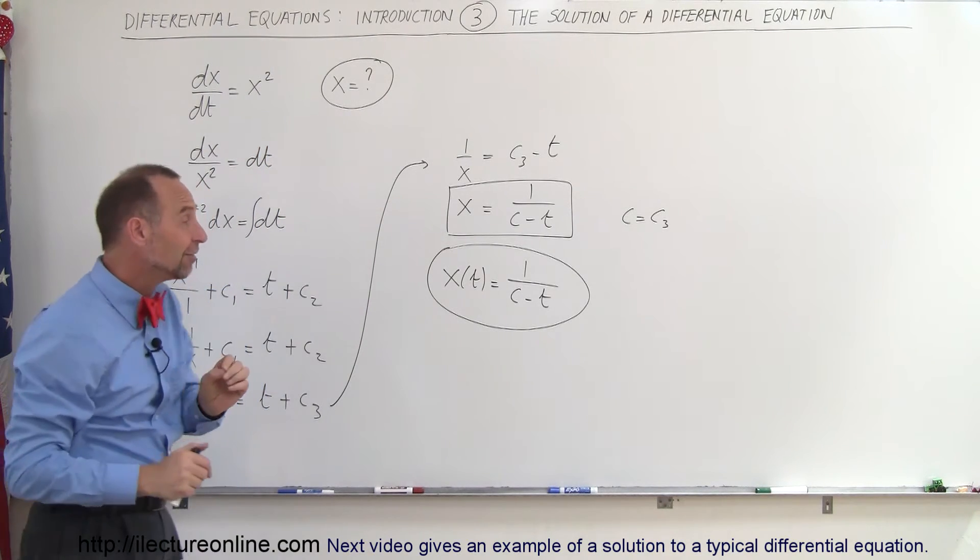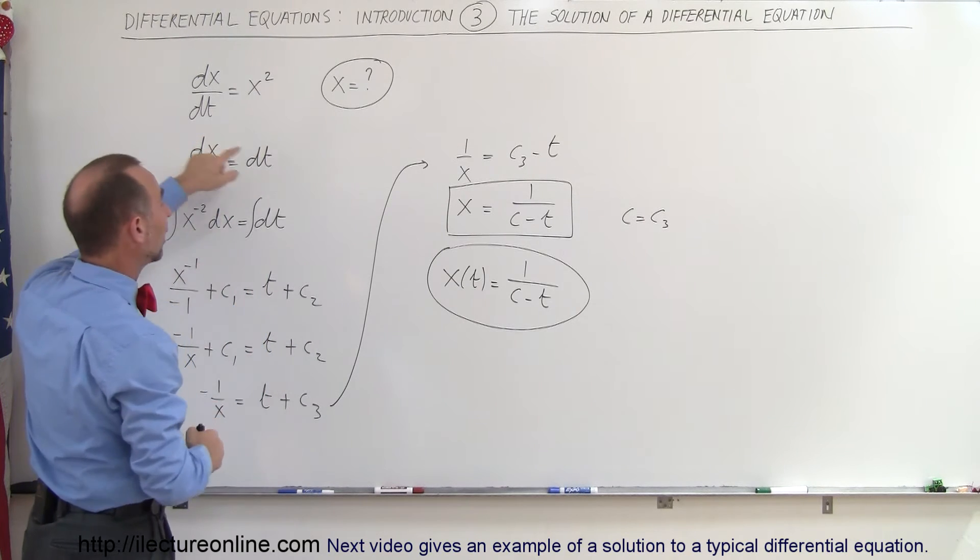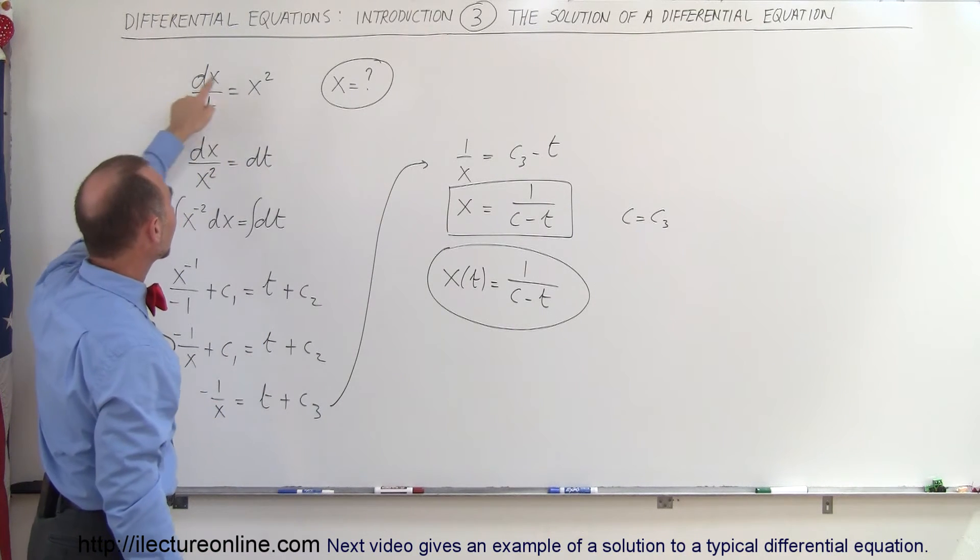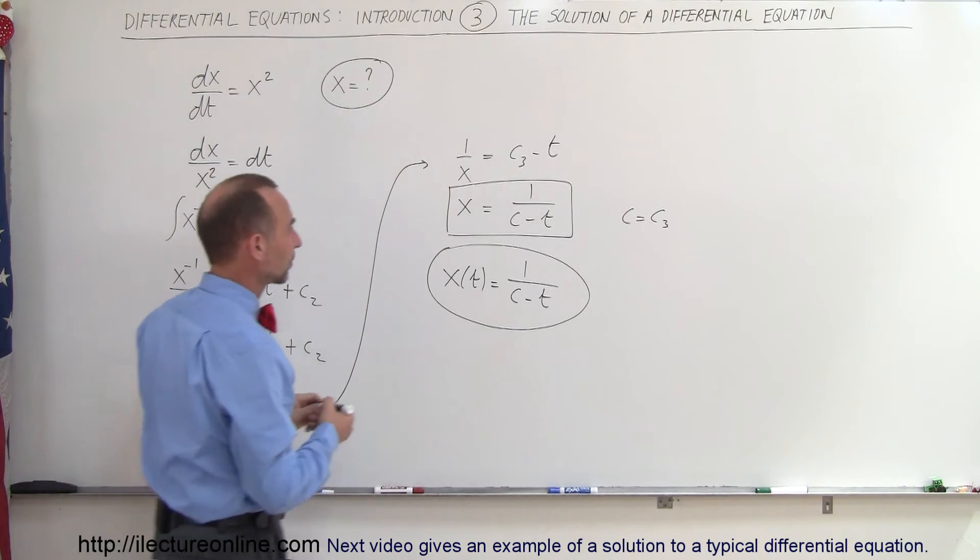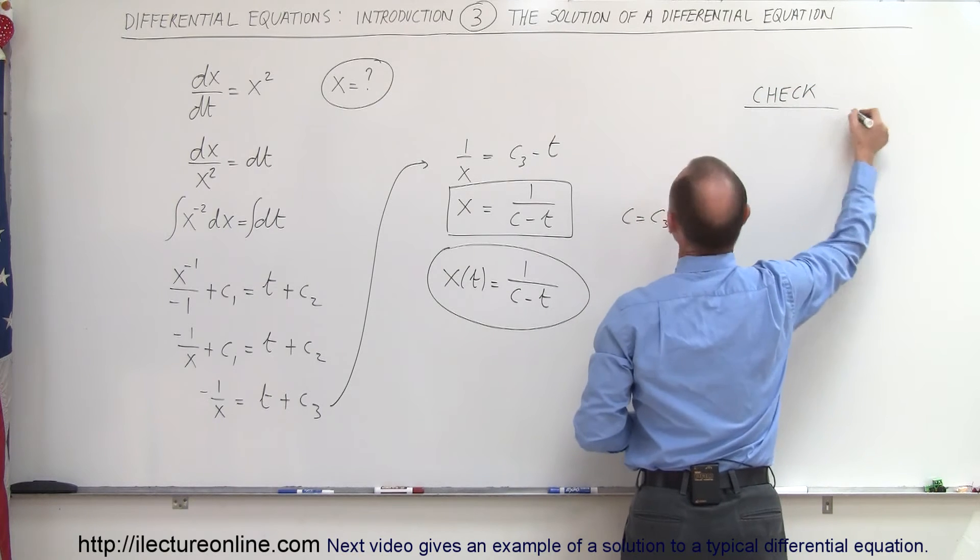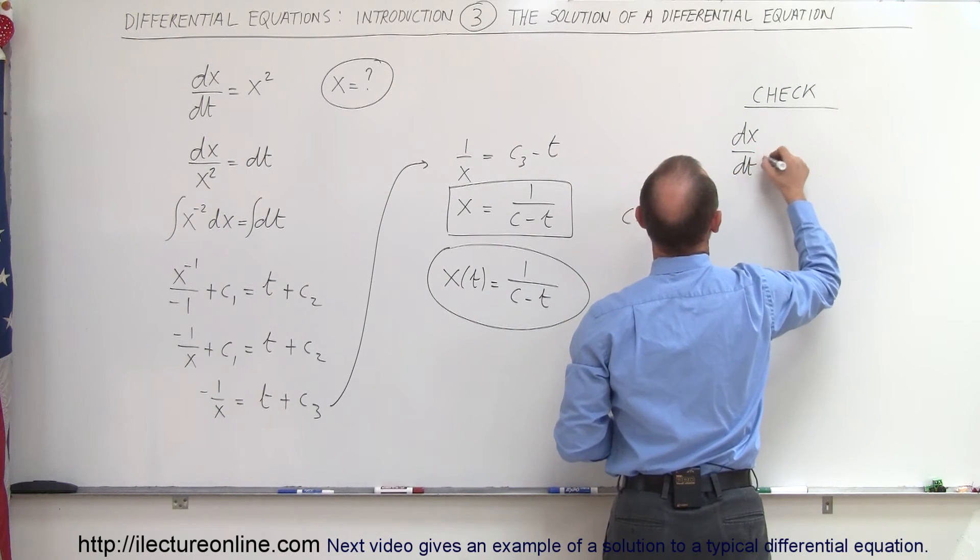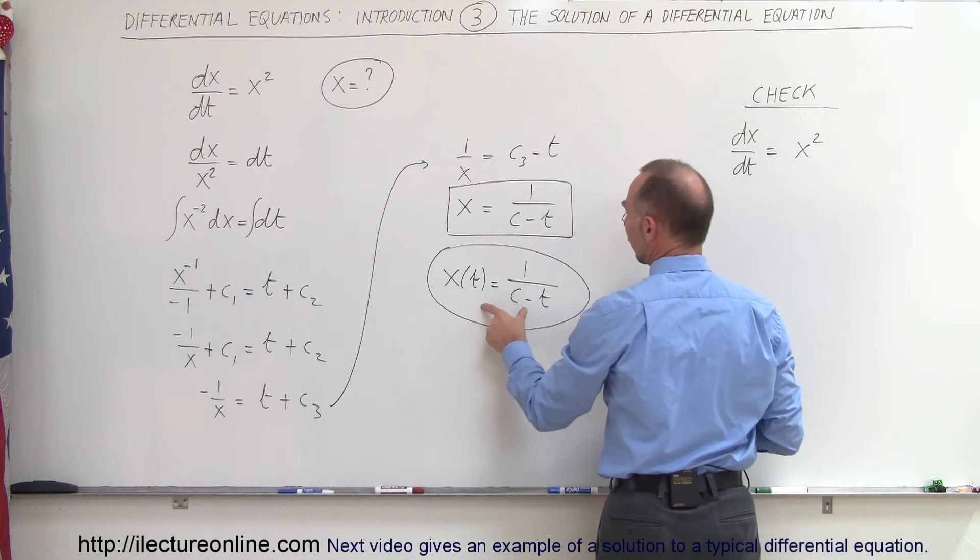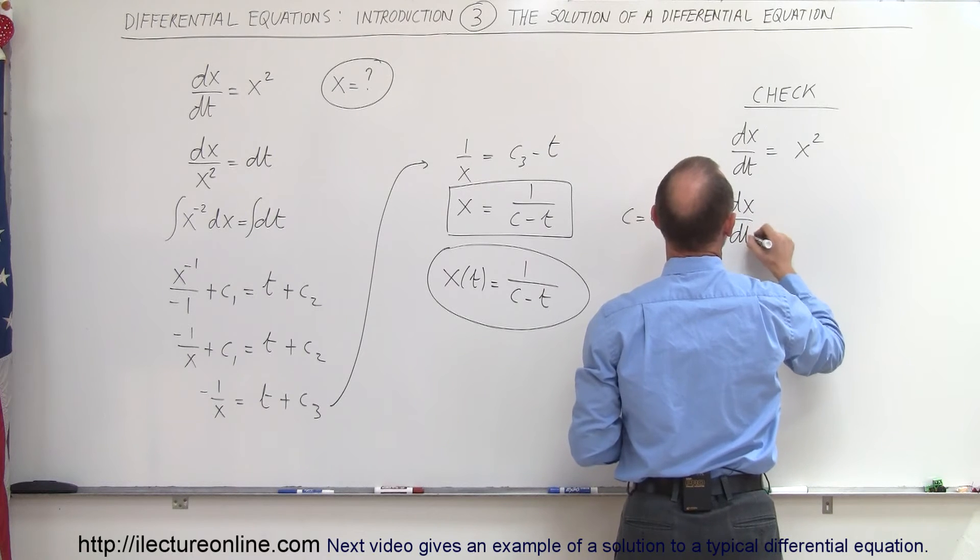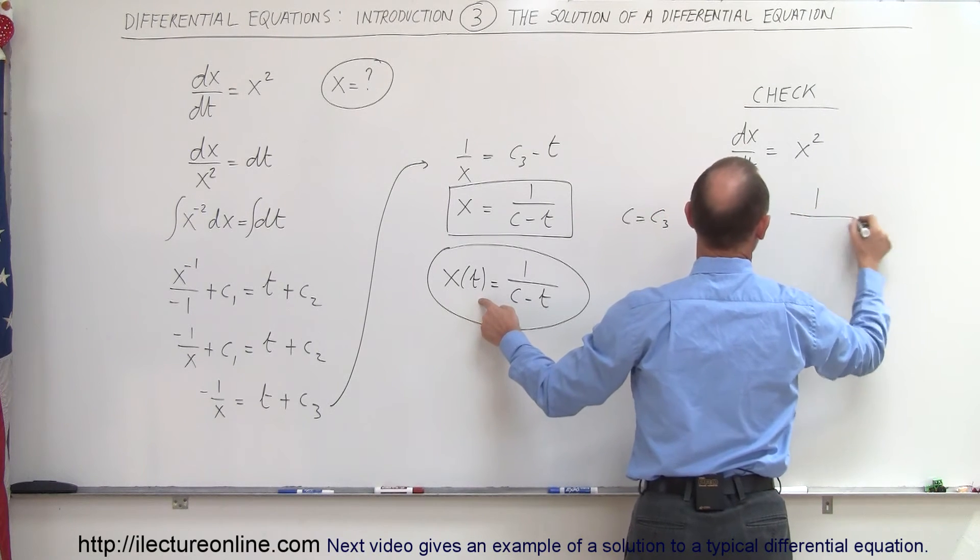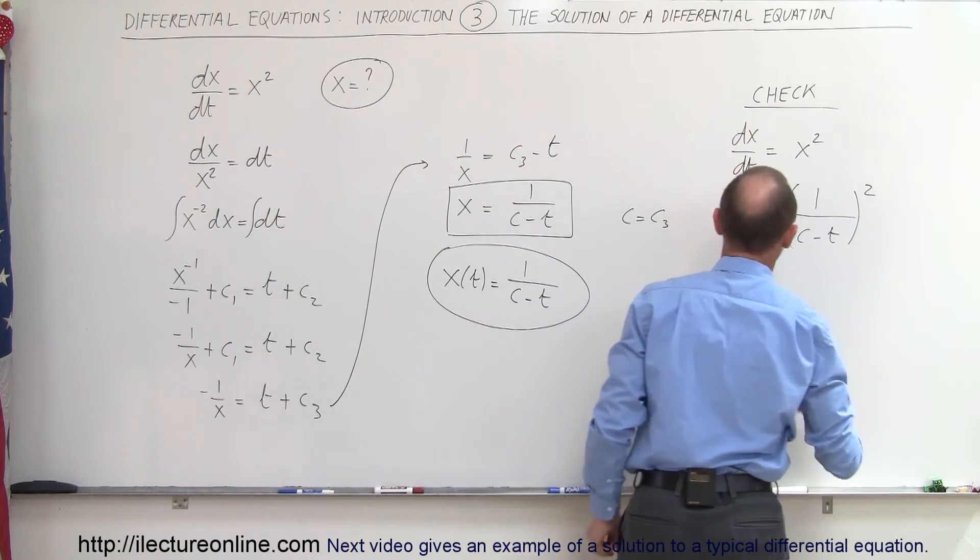But now to verify if it's indeed correct, let's go ahead and plug in what this is equal to. So we'll plug in an x squared on the right side and we have a dx/dt on the left side. So to check, we have dx/dt equals x squared. So what we're going to do is square the right side. And so that means that dx/dt should equal this quantity squared. So it's 1 divided by c minus t quantity squared.